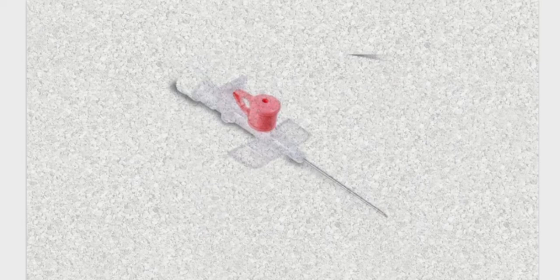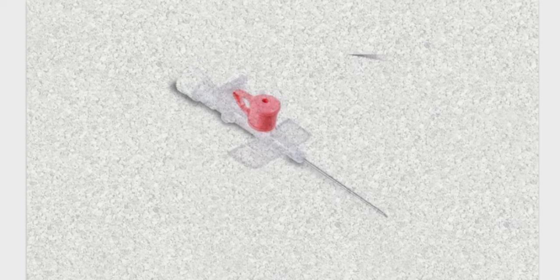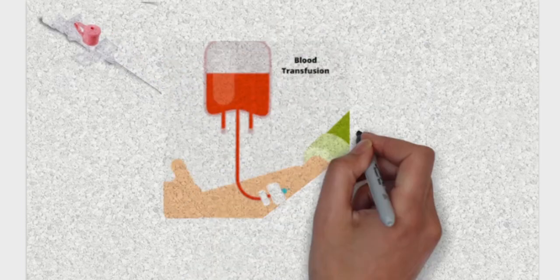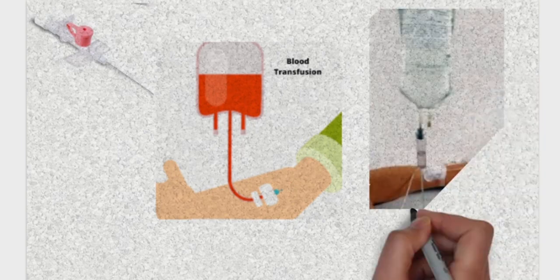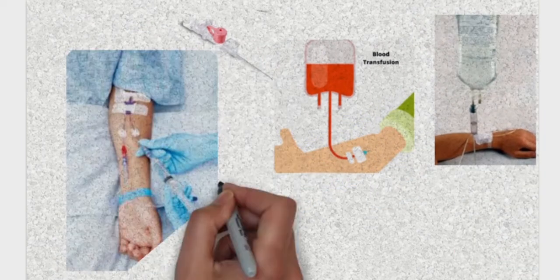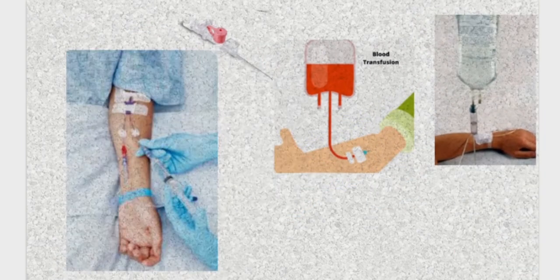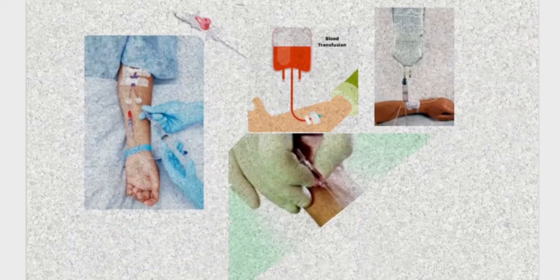A cannula is a tube that can be inserted into the body, often for delivery or removal of fluids for different purposes. Examples of delivering fluids include blood transfusion, administration of intravenous fluids, and administration of medication. While removal of fluids includes collection of blood samples.